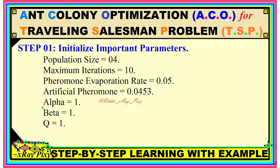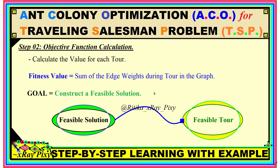The first step is the parameter initialization phase, where we initialize all important parameters. We are using a population size of 4 artificial ants, maximum iterations of 10, and a pheromone evaporation rate of 0.05. For the first iteration, we will use an artificial pheromone value of 0.0453 for all routes. After this iteration we will update the pheromone value for each route, but in the first iteration this constant value is used for all routes.